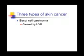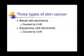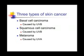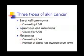There are three types of cancer caused by UVB and UVA rays. Basal cell carcinoma and squamous cell carcinoma are caused primarily by UVB radiation and account for more than 90% of all skin cancers in the United States. The third type, melanoma, is the rarest skin cancer, but it is also the one that kills the most people. Melanoma cases have doubled since 1970, making protection from UVA rays absolutely necessary.